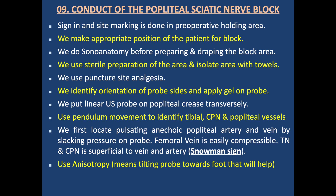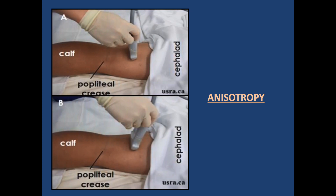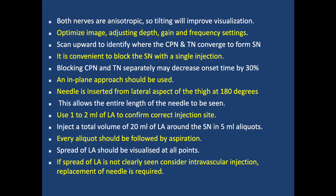The femoral vein is easily compressible. The tibial nerve is superficial to the vein and artery. The common peroneal nerve lies lateral. We use anisotropy — tilting the probe towards the foot — which will help improve visualization, as both nerves are anisotropic. We optimize the image, adjust depth, gain, and frequency settings. We then scan upward to identify where the common peroneal and tibial nerve converge to form the sciatic nerve. It is convenient to block the sciatic nerve with a single injection.